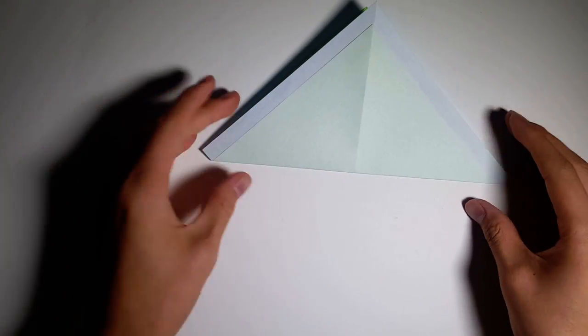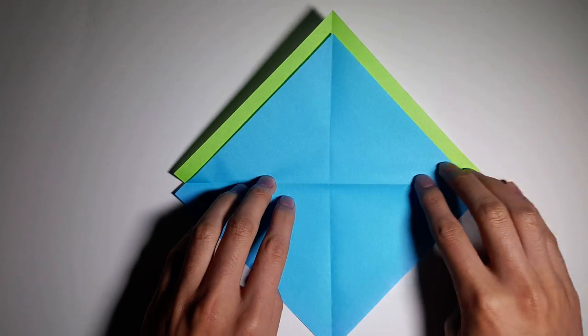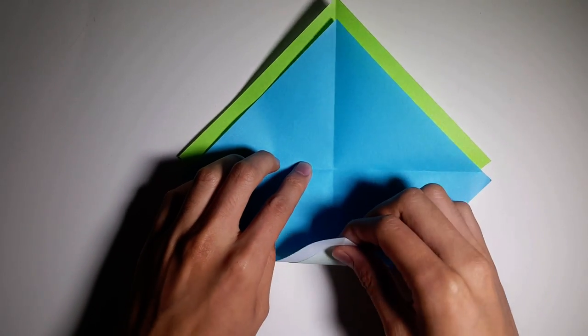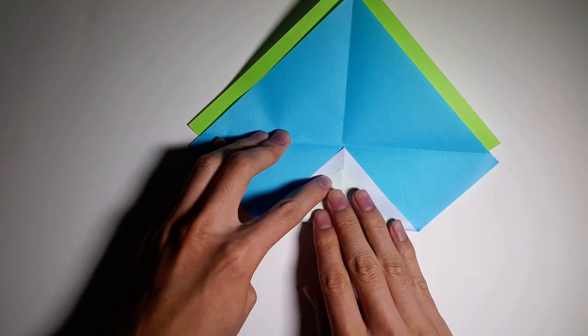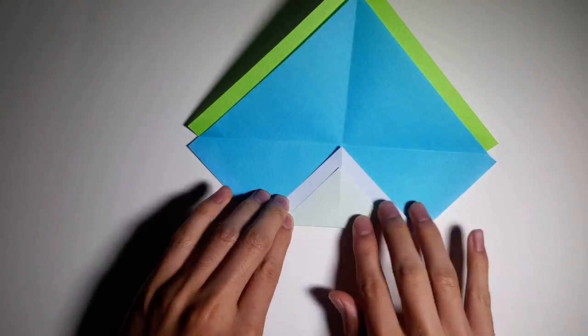After we've done that, we're gonna open it back up. Now that we have a horizontal line from the bottom, just grab the two pieces of paper together and fold the longer one to meet the middle point. We're just gonna fold it horizontally.